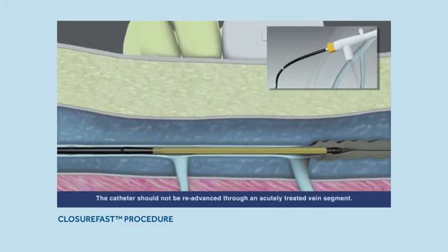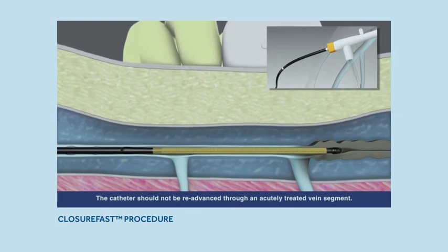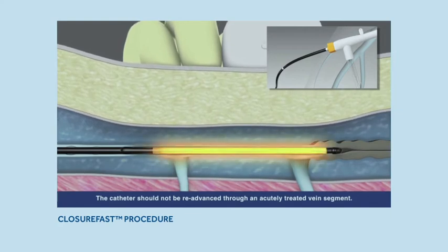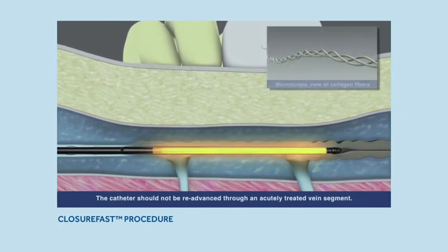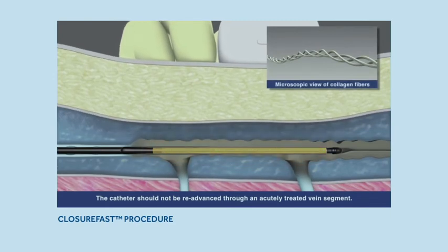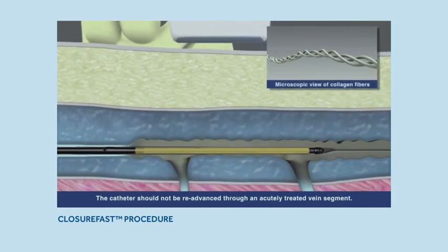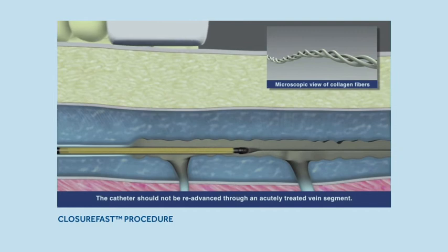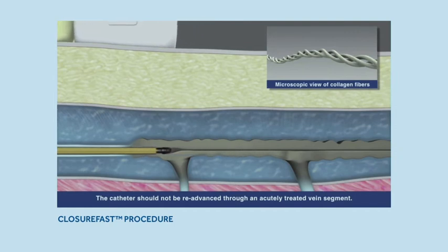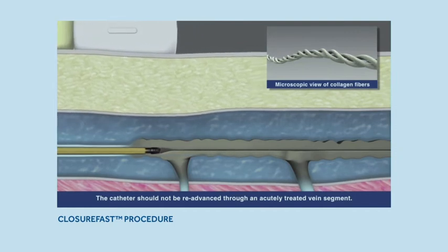The heating element reaches 120 degrees Celsius for 20 seconds to precisely and effectively destroy the endothelial wall of the vein, causing a collagen response to close the vein. The blood redirects to healthy veins and the diseased vein is left to fibrose.